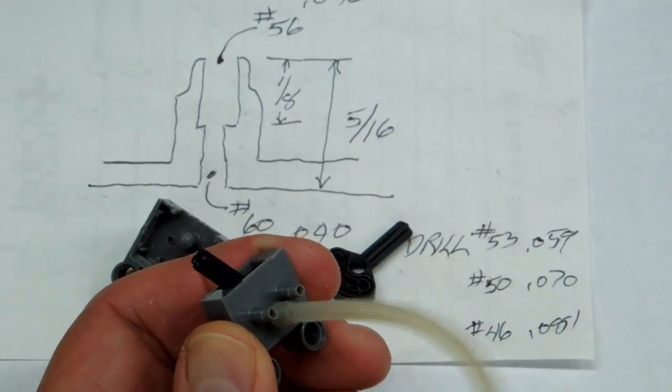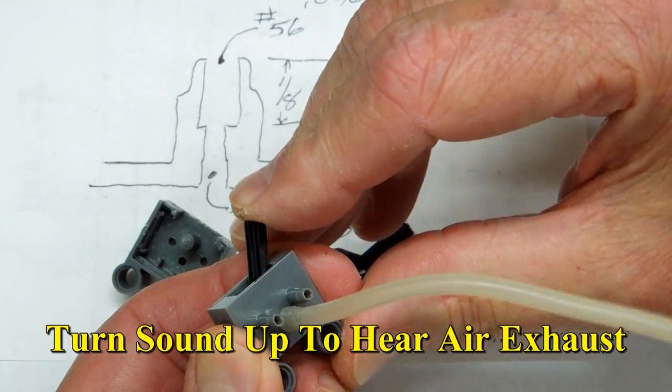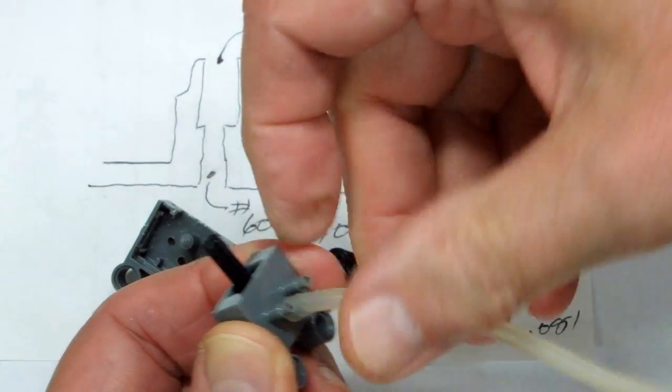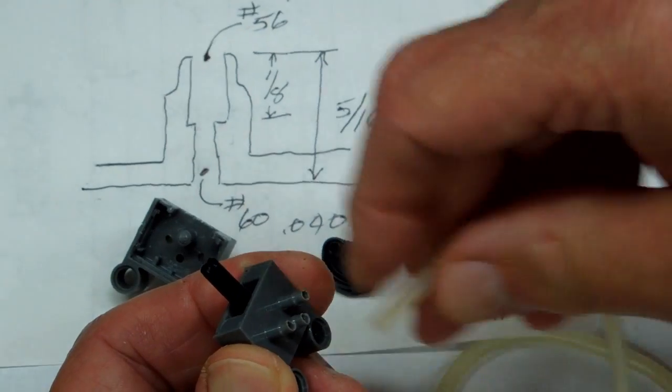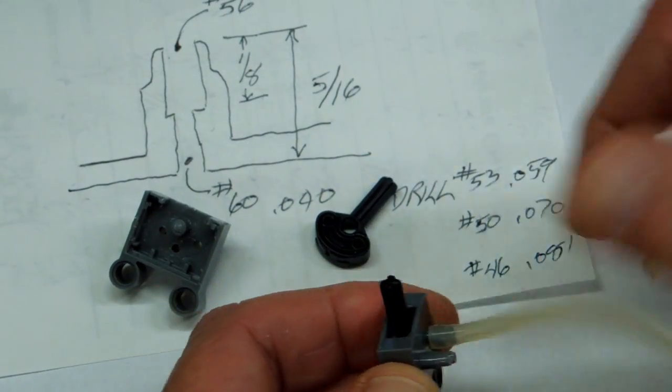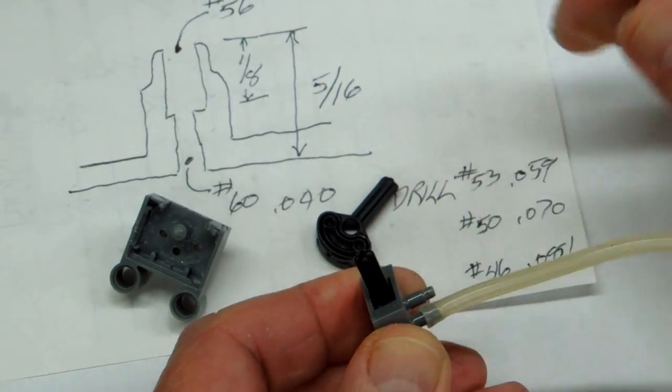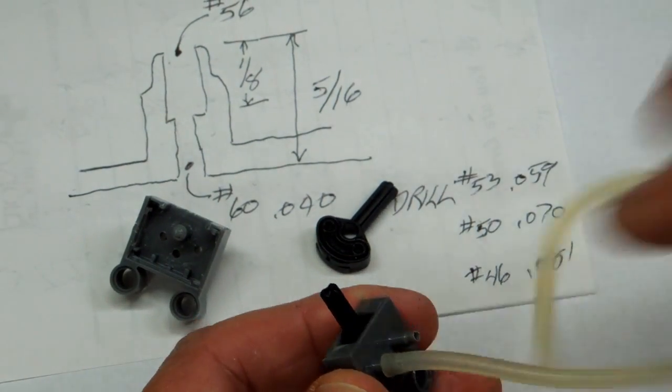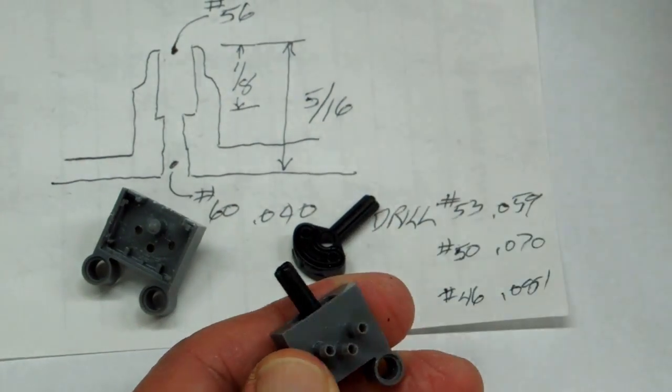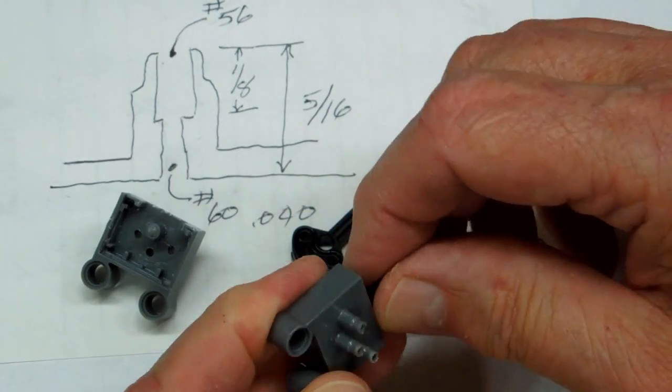Testing the valve after drilling. It switches the air back and forth as it should, and all three of these positions seal in the off position. So that works quite well.